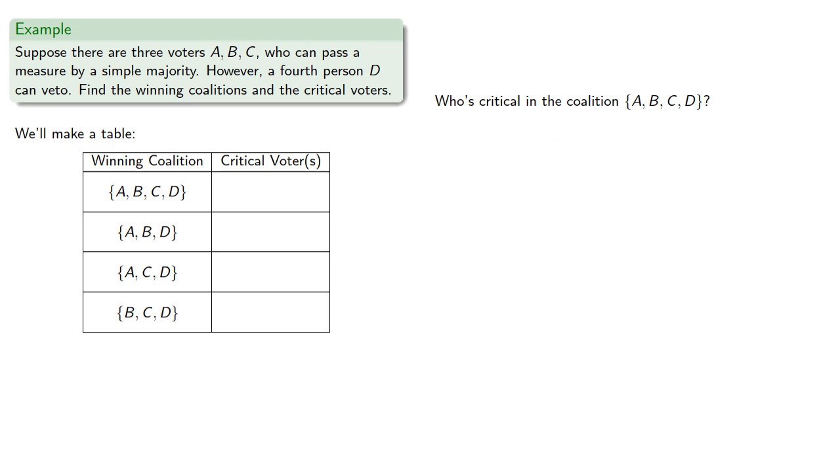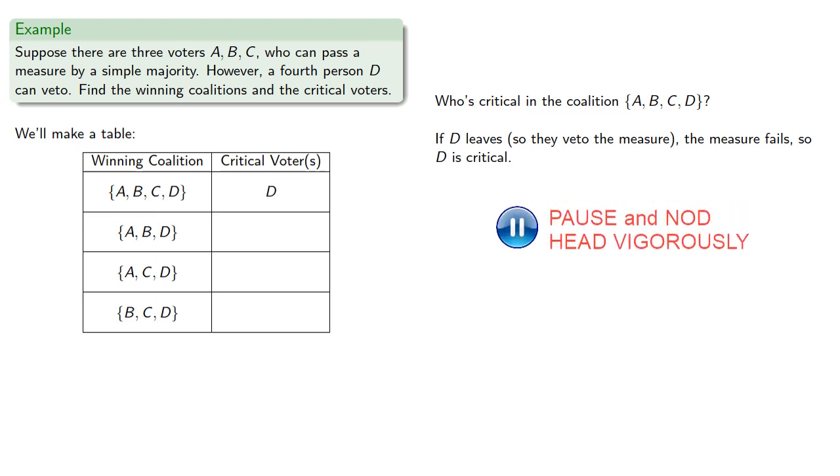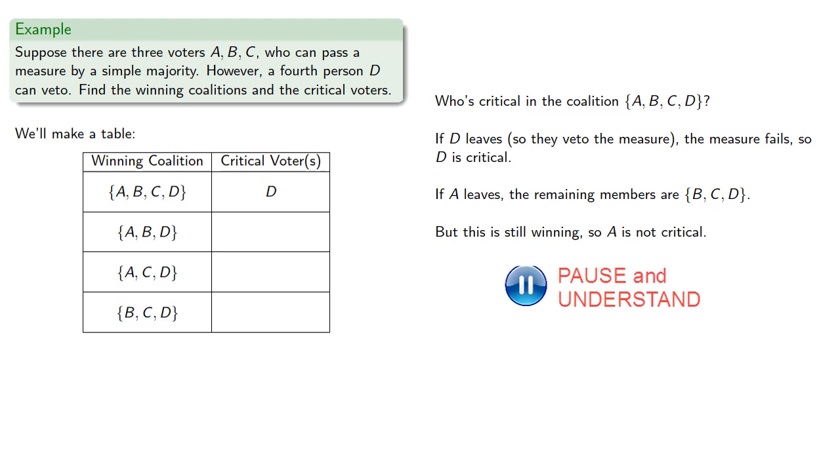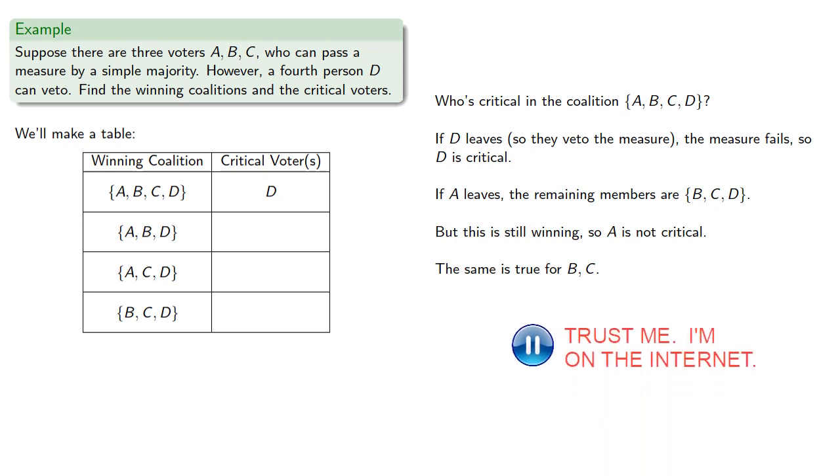So let's find our critical voters. Who's critical in the coalition A, B, C, and D? If D leaves, so they veto the measure, the measure fails, so D is critical. If A leaves, the remaining members are B, C, and D, and we see this is still winning, so A is not critical. And the same is true for B and C. So the only critical voter is D.